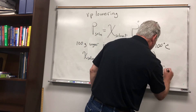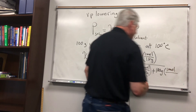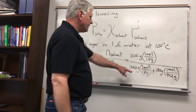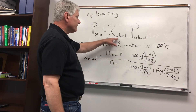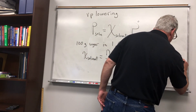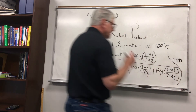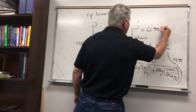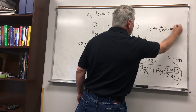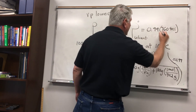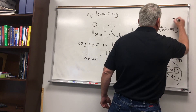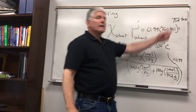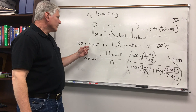For the moles of sugar, we have 100 grams of sugar with a molecular weight of 342 grams per mole. So the mole fraction of the solvent comes out to 0.99. The vapor pressure of the solution equals 0.99 times 760 torr. You can see the vapor pressure has been lowered by dissolving sugar into water.